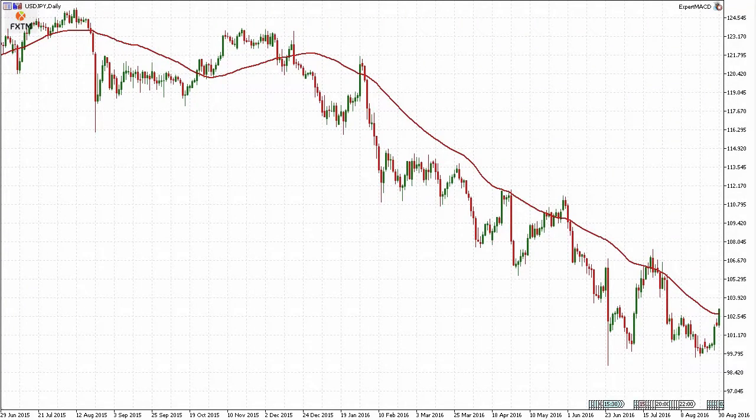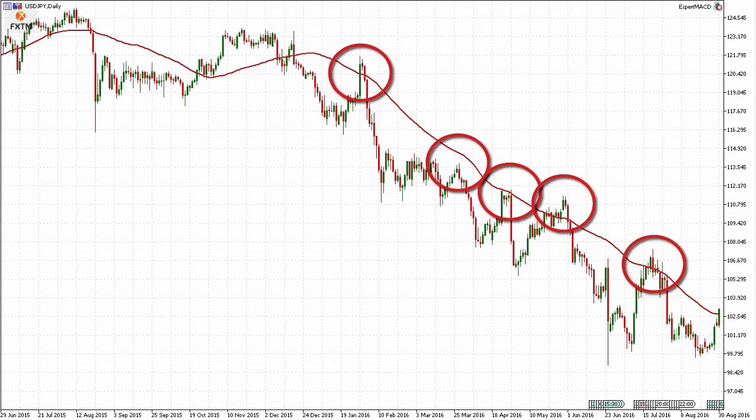So in this example on the yen, you can see that the price was falling, the moving average was also declining, and when the price would come up to or just above briefly that moving average, what that's telling us is that it's signaling a resistance level that's a bit more sensitive than just a generic trend line.